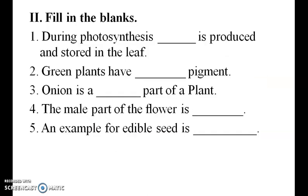Fill in the blanks. During photosynthesis, food is produced and stored in the leaf. Second one: green plants have green pigment. Third one: onion is the stem part of a plant.